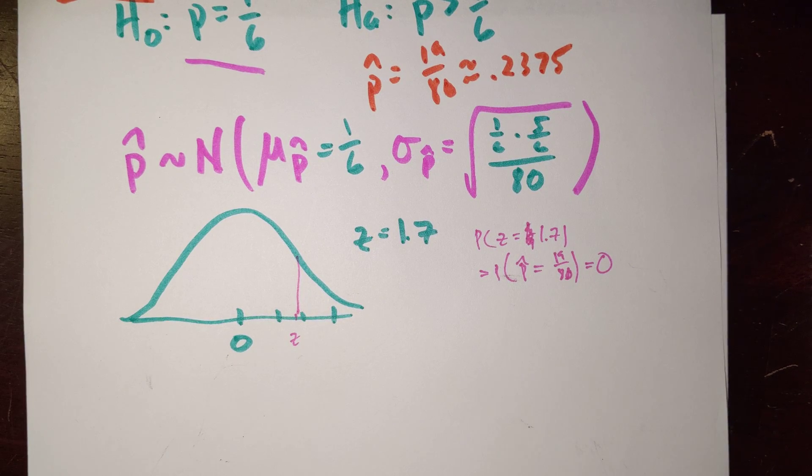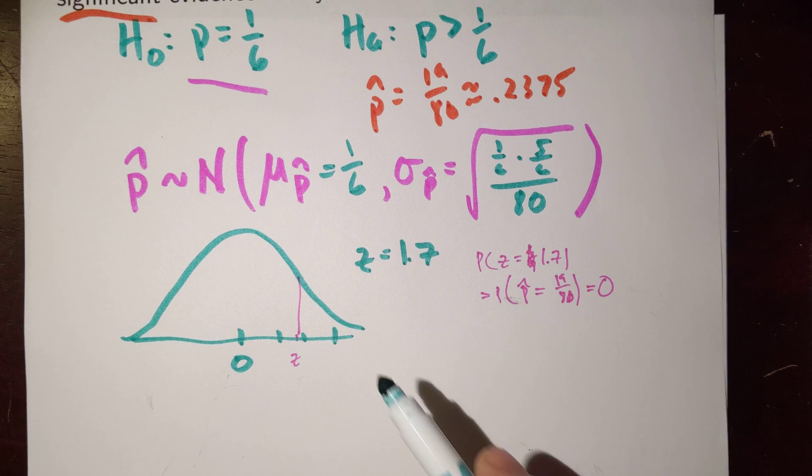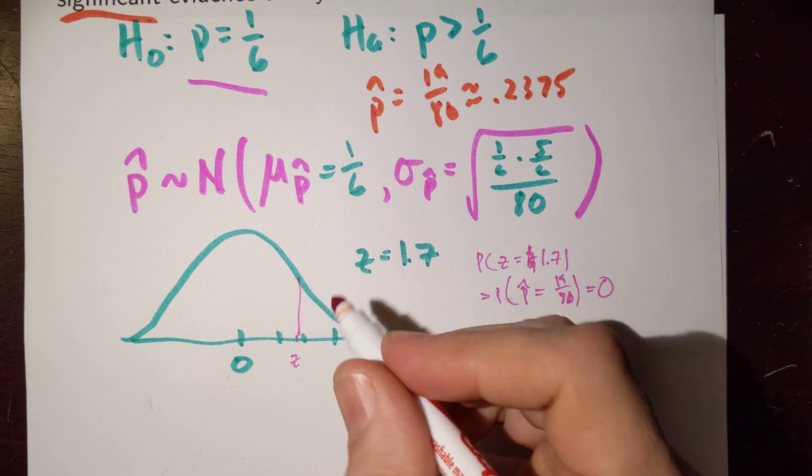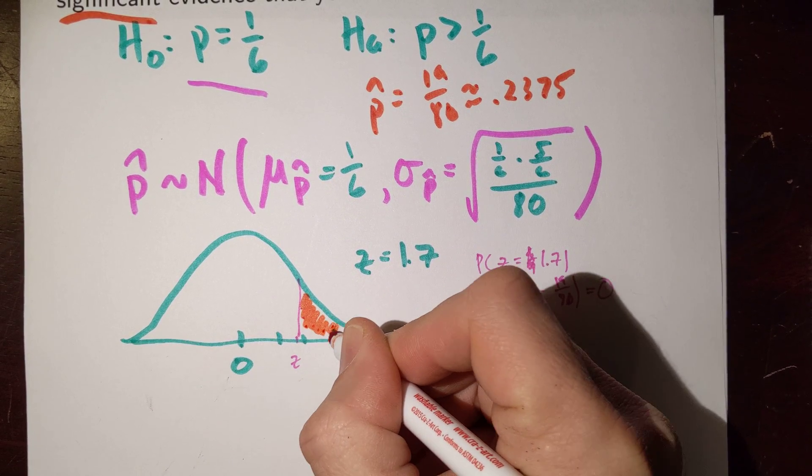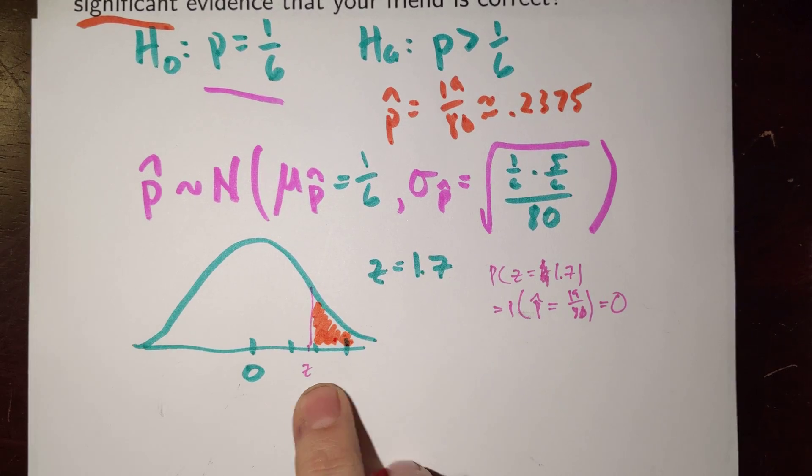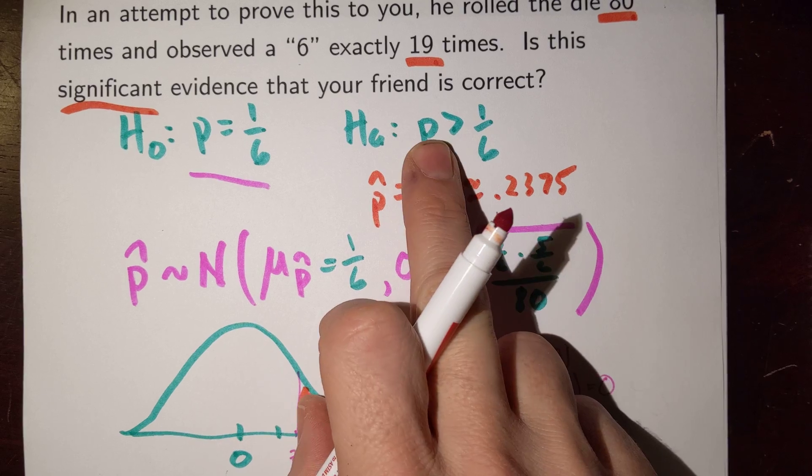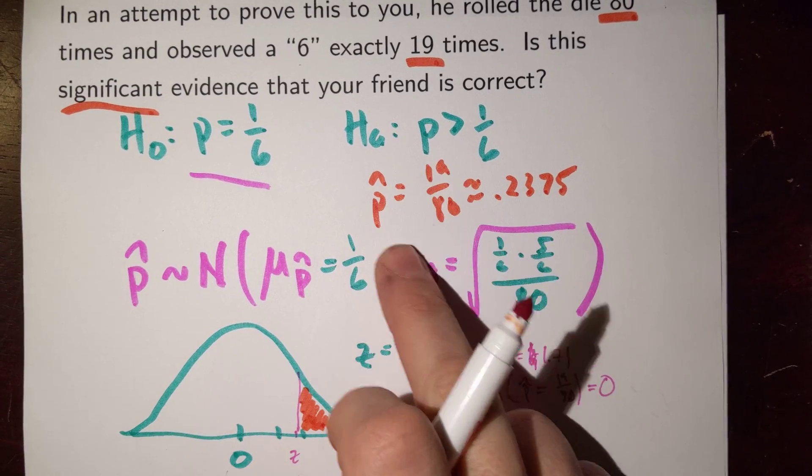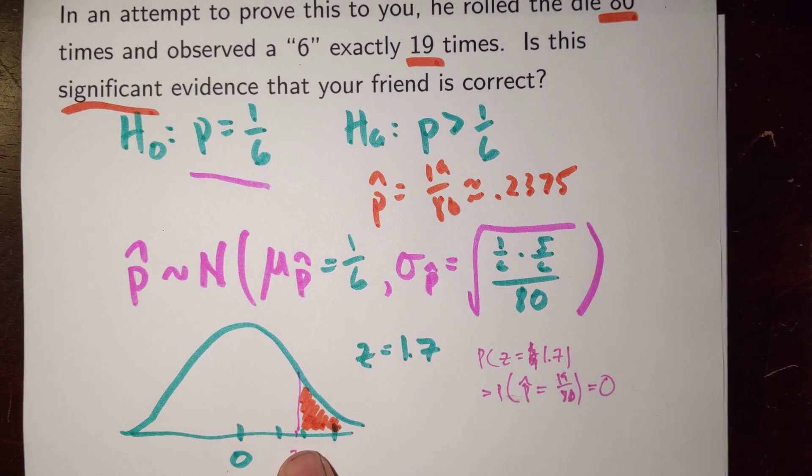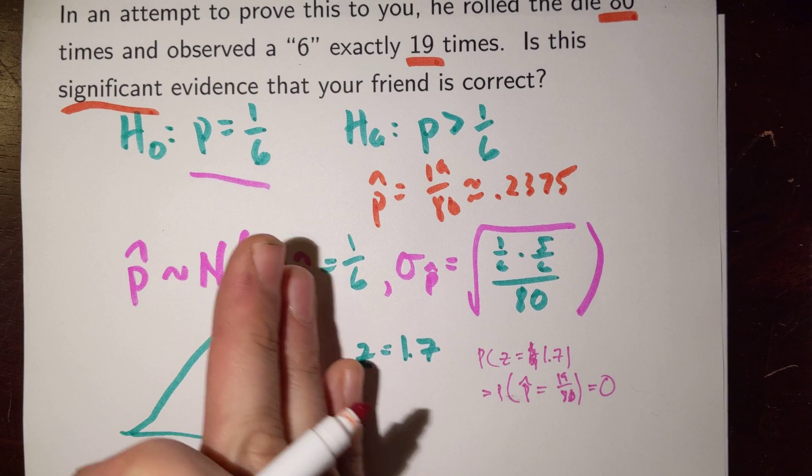Instead, let me calculate a probability in a particular direction. And just the way that you drew this, you can see it seems logical to think about things in this way. Now, why am I thinking to the right? It's not just because the Z is over there. It's because, remember, that's the direction that I cared about. My alternative was saying that P is greater than 1/6. So let's think about this particular value or greater.